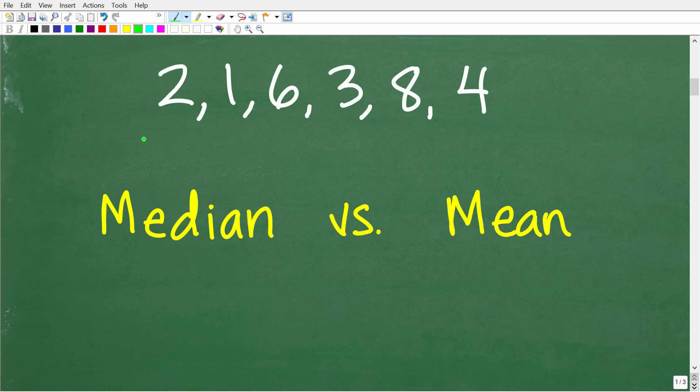But what we are talking about here is basic statistics, and both of these concepts are important. Because in basic statistics, what we're trying to do is to find a measure of central tendency. So we have some numbers here, and we're trying to maybe calculate something like the average to give us a sense of what's going on with the overall set of numbers. Now, here we have 2, 1, 6, 3, 8, and 4. And we can calculate the average, which is the mean. But the median is something different.